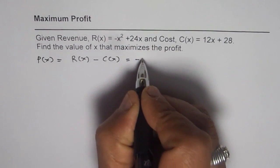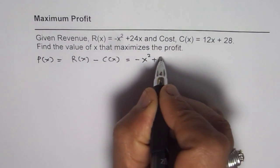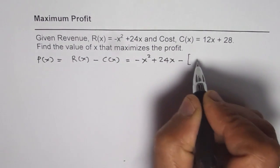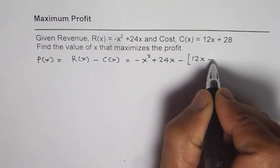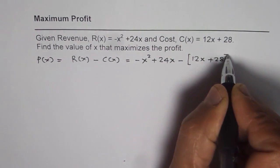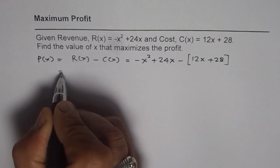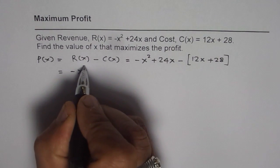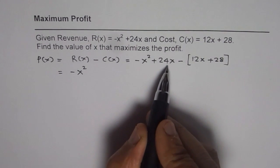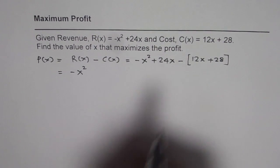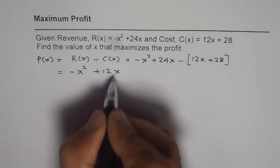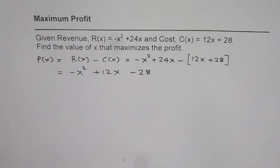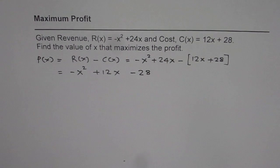So revenue is given to us as -x² + 24x and we can take away the cost function from it which is 12x + 28. So we get our equation for profit. The equation is -x² + 24x - 12x will give us 12x and then -28. So that becomes the profit function.